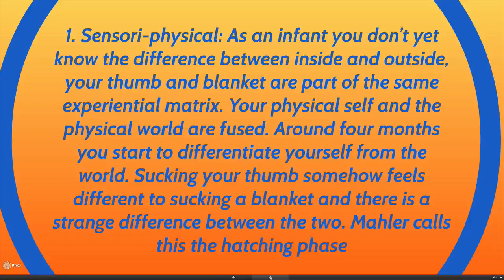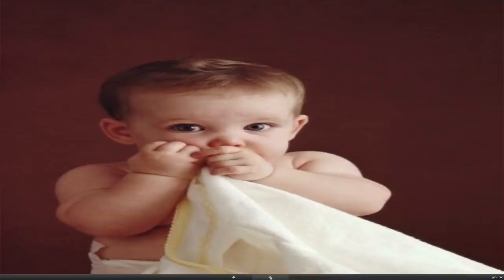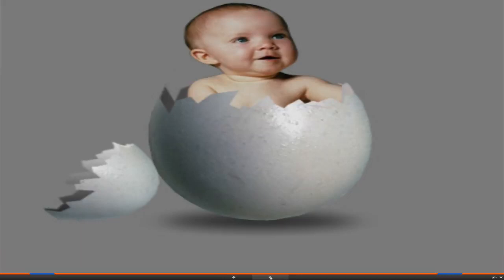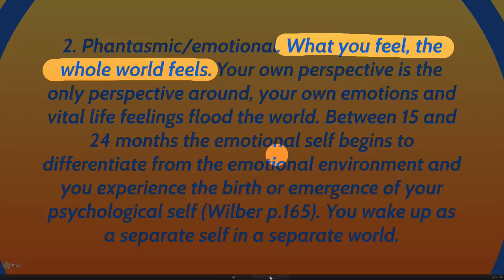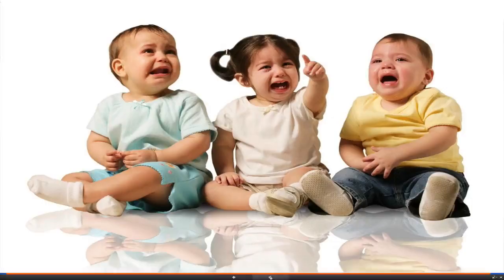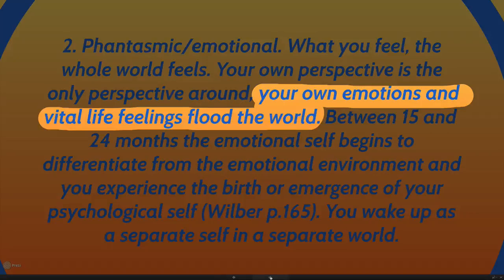We can start off with ourselves as an infant. When you are actually born, you really don't know that you have an inside or an outside — your thumb and blanket are the same thing. But slowly but surely you begin to work out that you have a physical self, that your actual physical self starts to hatch from the soup of existence, and you begin to realize that your toe is actually different to your blanket. Even though your physical self has emerged, your emotional self has not yet emerged properly. What you feel, you feel the whole world feels. When one baby cries, other babies start to cry — not because they're in sympathy with other babies, but because the world itself is crying and they're part of it.